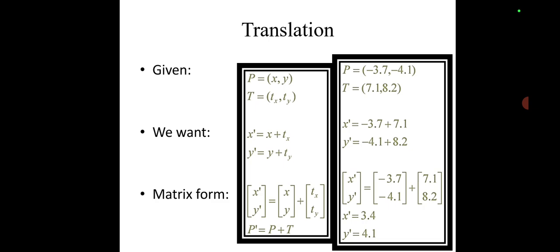With translation, we are moving, shifting the point P having original coordinates (-3.7, -4.1) to the new location (3.4, 4.1). So with this, we've covered translation, showing we are moving a particular coordinate in a straight-line path to a new location. Thank you.